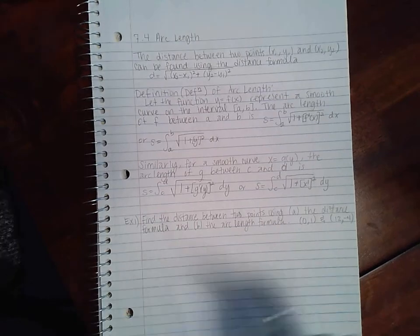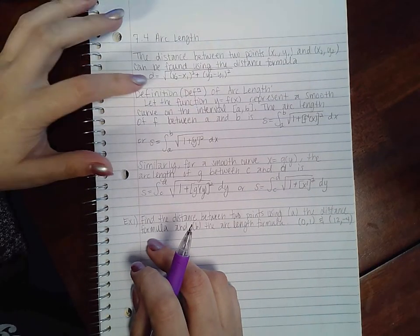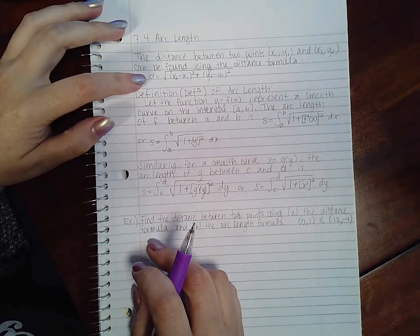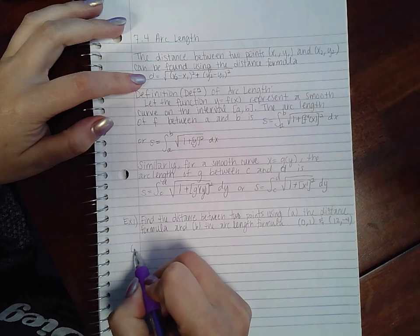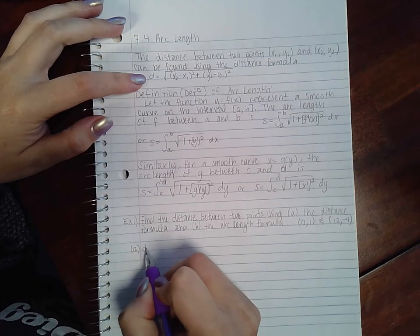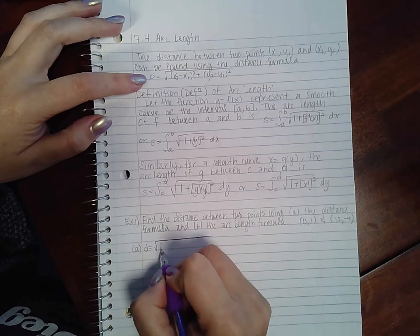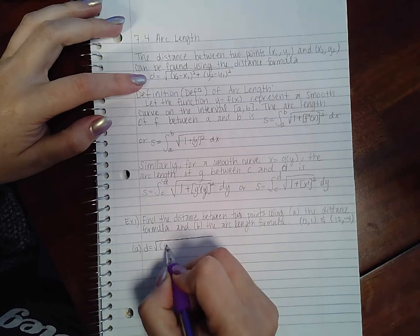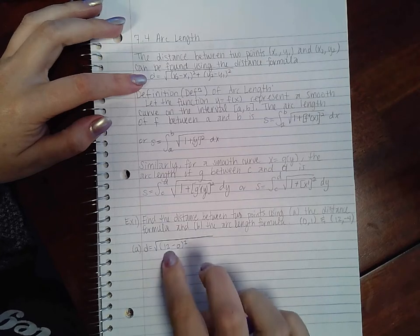In order for us to use the distance formula, we can actually use the distance formula right away. We'll plug that into the distance formula. This is part A. We're going to get the square root of x2 minus x1, which is 12 minus 0.